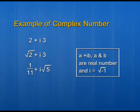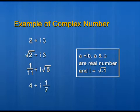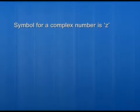Taking a as the rational number 1 upon 11 and b as the irrational number root 5, the third example is 1 upon 11 plus i times root 5. In the last example, I have taken a as the integer 4 and b as the rational number 1 upon 7, so the last example is 4 plus i times 1 upon 7. By choosing a and b as any real numbers, you can form many examples of complex numbers.